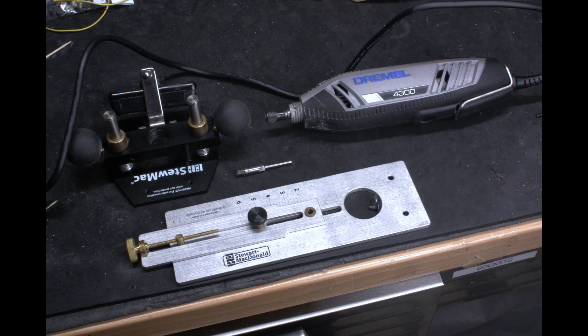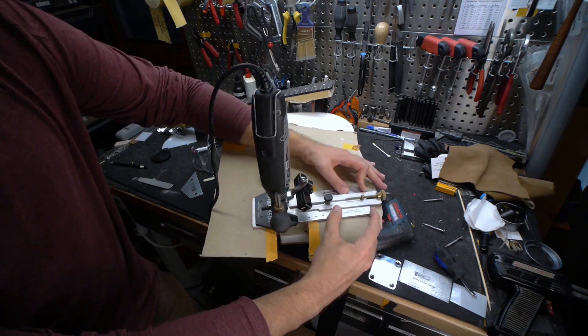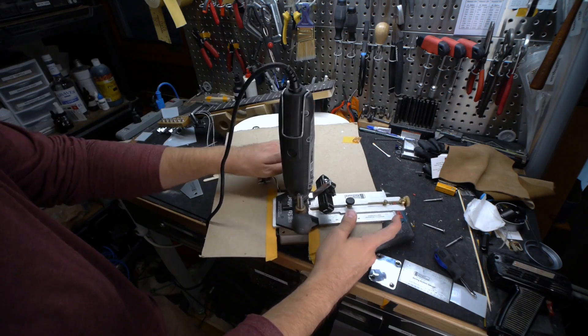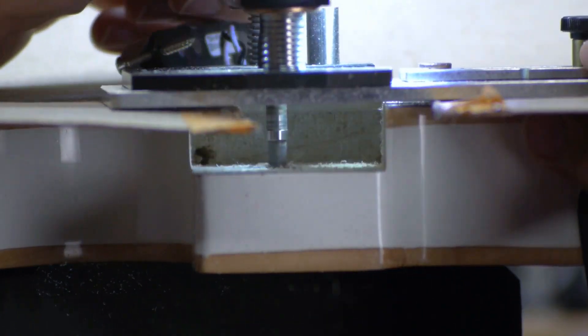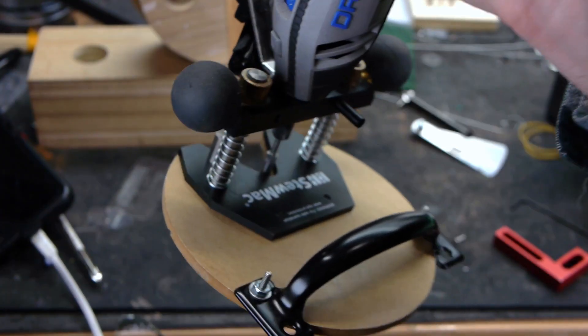The screws came with my StewMac soundhole routing jig, which I've used for routing neck pockets for a long time. It'll work great for this job, but the base plate I made is a bit more user-friendly. You can find a link to my original video describing this process in the description box.